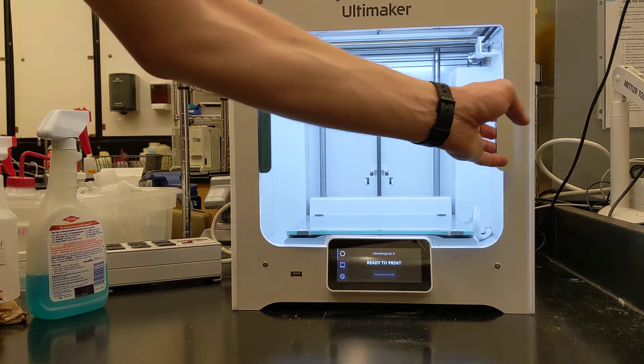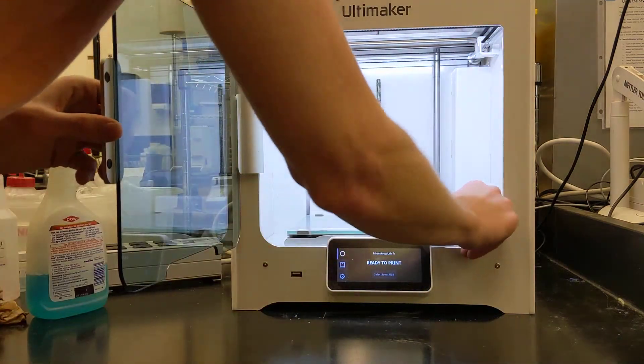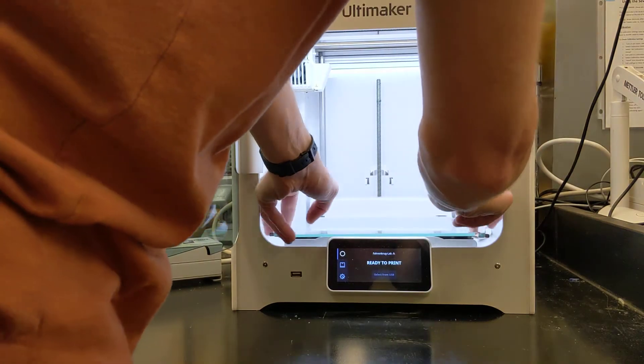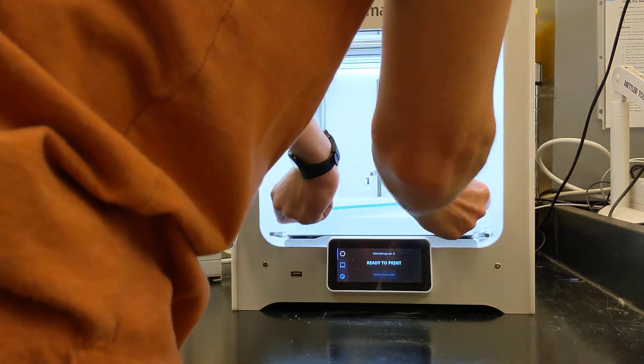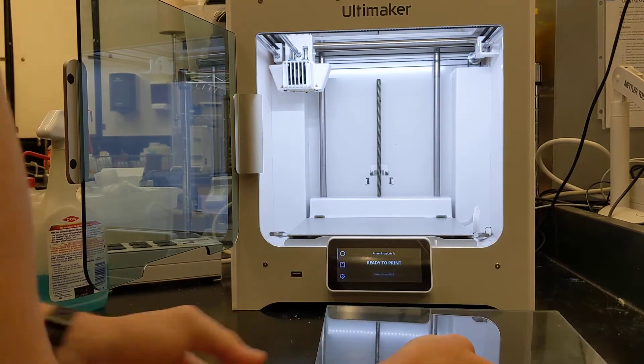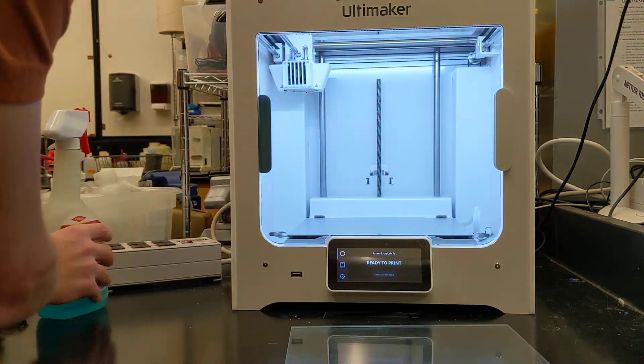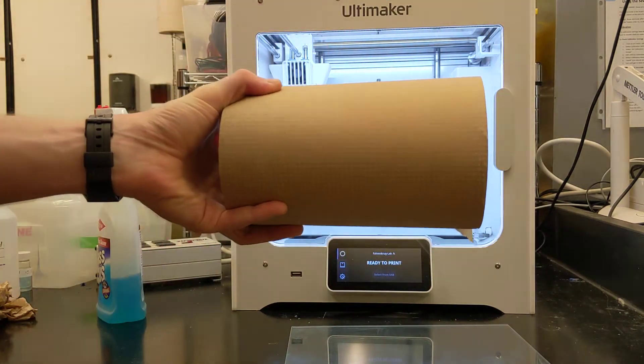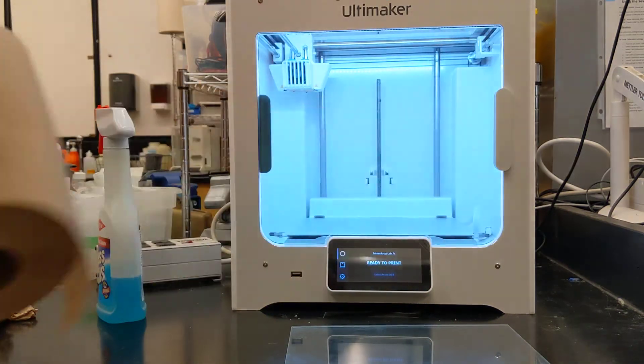First, you want to make sure that your print bed is completely clean, which I showed you in a previous video. If you haven't watched that one, this is just a glass plate. If it's not clean, if there's glue stick residue that's left over, you can use just a simple glass cleaner and a roll of paper towels and completely scrub that until it's clean.